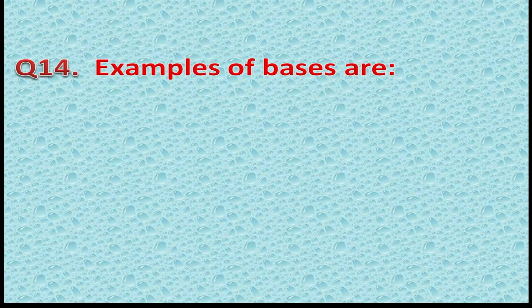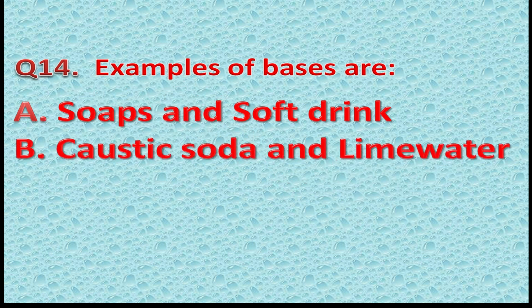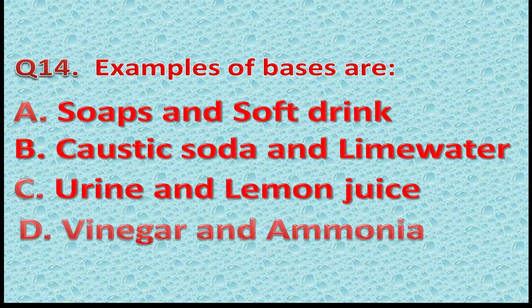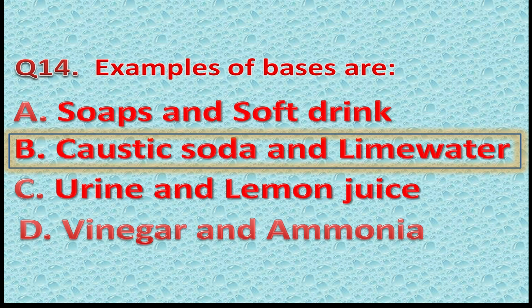Question 14: Examples of bases are — Option A: Soaps and soft drink. Option B: Caustic soda and lime water. Option C: Urine and lemon juice. Option D: Vinegar and ammonia. The correct answer was B — Caustic soda and lime water, because both are bases. You got one more point in your score.